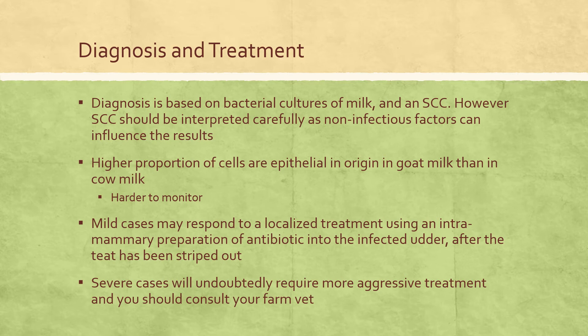Treatment depends on the severity of the infection. Microorganisms associated with mastitis in dairy goats are commonly controlled with antibiotics. Mild cases may respond to a localized treatment using an intramammary preparation of antibiotic into the infected udder after you strip the teat of all milk. On our farm, I strip the teat out and then insert an antibiotic cream into the bottom of the udder and squeeze all the cream in.